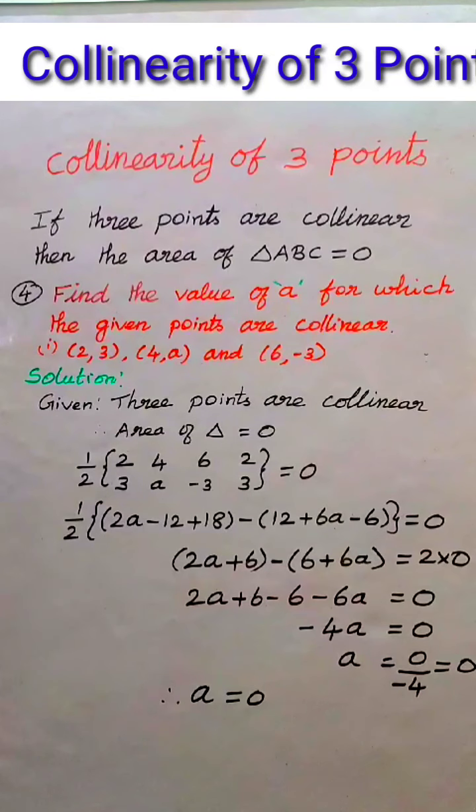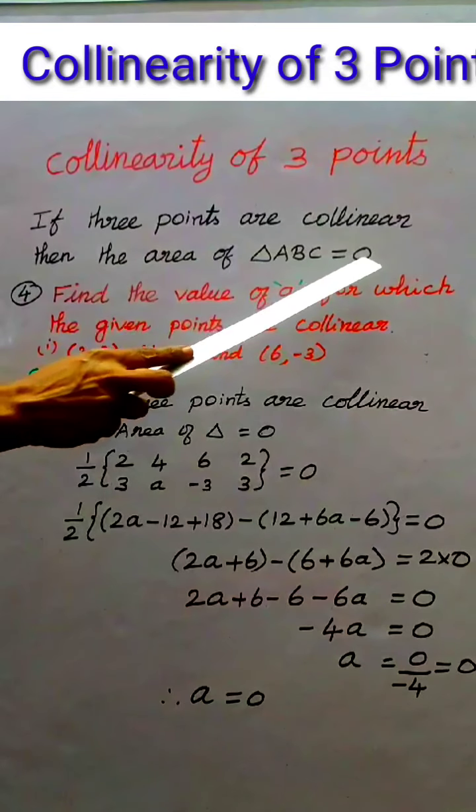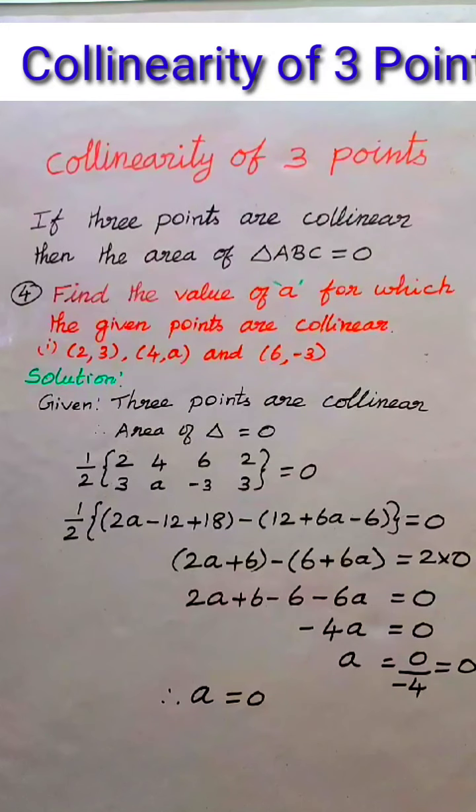Condition for collinearity: If 3 points are collinear, then the area of triangle ABC equals 0. So now we are going to see one problem.